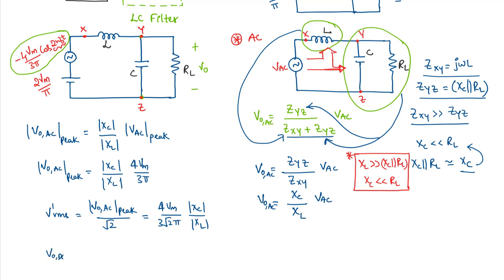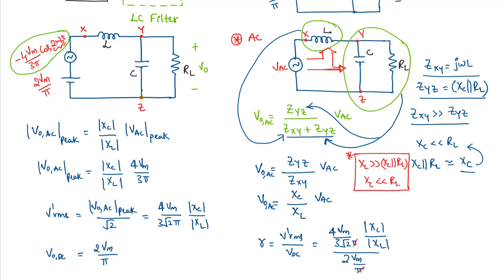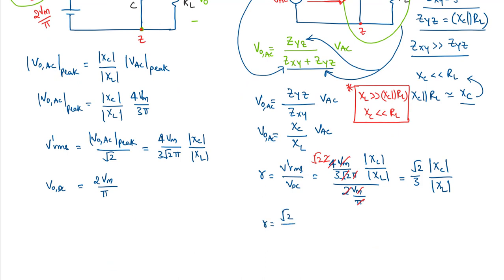The output DC component is 2Vm/π. The ripple factor equals V'_RMS / VDC. Substituting: [4Vm / (3√2π)] × (|XC| / |XL|) divided by 2Vm/π. Canceling π, Vm, and simplifying the constants, the ripple factor = (√2 / 3) × (|XC| / |XL|).